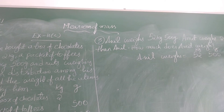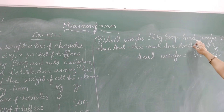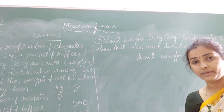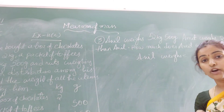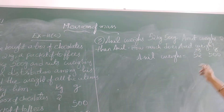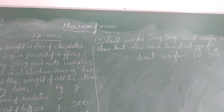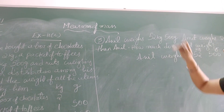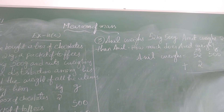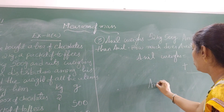Amit weighs 2 kg 375 grams more than Amin. Amin weighs more here, but the actual weight of Amin is not given. So we need to find the actual weight of Amin. Amin's weight was compared with Anil's. Amit is 2 kg 375 grams more than Amin, so we need to add that to find Amin's weight. That is 2 kg and 375 grams more — so that is the weight of Amin.